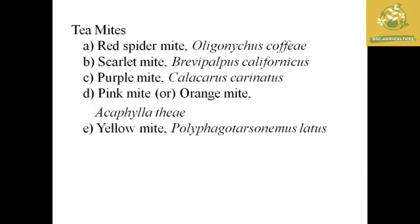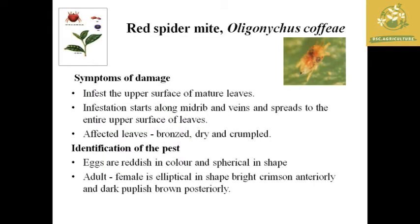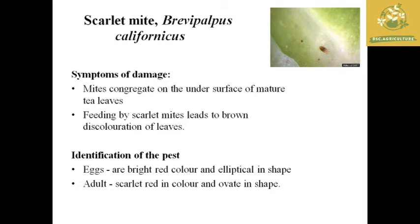Other pests present in tea include mites: red spider mite, scarlet mite, purple mite, pink mite, and yellow mite, each with respective scientific names. The red spider mite gets its name from its red coloration. Symptom of damage: it infests the upper surface of mature leaves, infestation starting along mid-ribs and veins and spreading to the entire upper surface. Affected leaves give a bronze, dry, and crumpled appearance. The eggs are reddish in color and the adult female is elliptical with crimson reddish color and dark purplish-brown posteriorly.